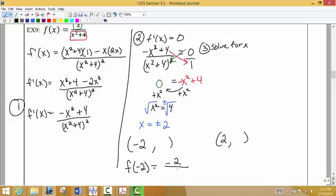I'm putting in a negative 2 in place of x, so that's negative 2 on top. And then negative 2 squared, so put that negative 2 in the parentheses and square it, and then add 4. I get negative 2 divided by 8, which reduces to give me negative 1 fourth. So here's one point on my graph that has a horizontal tangent line.